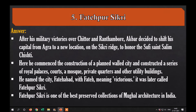Fatehpur Sikri. After his military victories over Chittor and Ranthambore, Akbar decided to shift his capital from Agra to a new location on the Sikri ridge, to honor the Sufi saint Salim Chishti. Here he commenced the construction of a planned walled city and constructed a series of royal palaces, courts, a mosque, private quarters, and other utility buildings. He named the city Fatehabad — Fateh meaning victorious — and it was later called Fatehpur Sikri. Fatehpur Sikri is one of the best preserved collections of Mughal architecture in India.